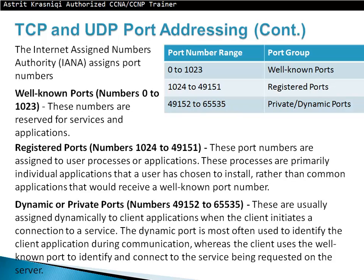Dynamic or private ports are from 49152 to 65535. Well-known ports are reserved for services and applications like FTP, SMTP, HTTP, HTTPS, and TFTP — anything from 0 to 1023. Registered ports from 1024 to 49151 are assigned to user processes or individual applications a user has chosen to install. Dynamic or private ports are usually assigned dynamically to client applications when the client initiates a connection; they identify the client application during communication while the client uses the well-known port to identify the service being requested.